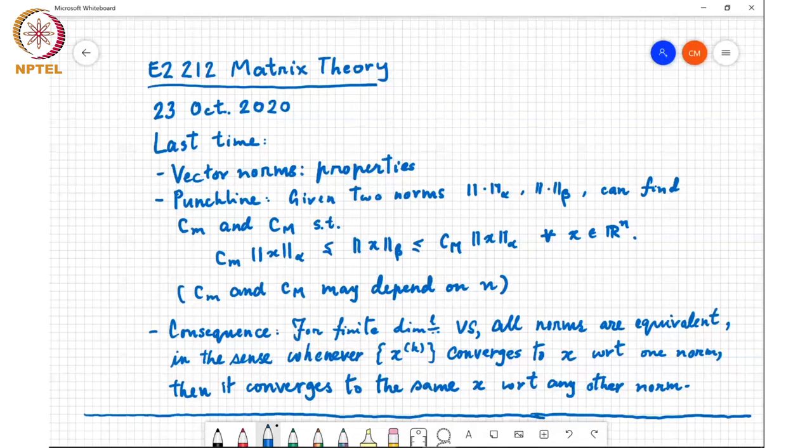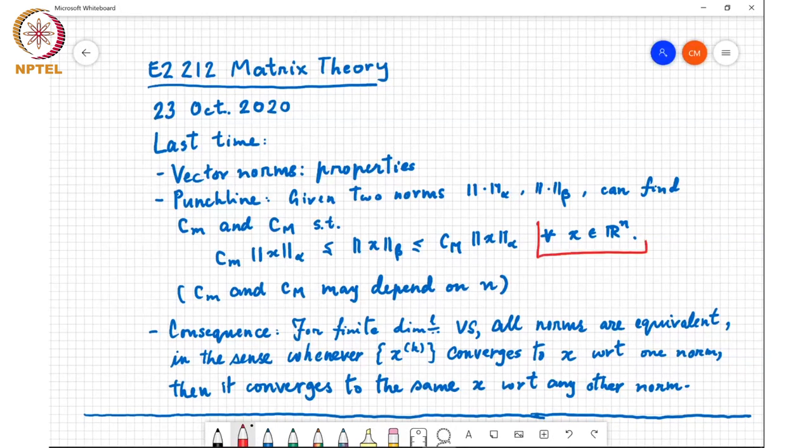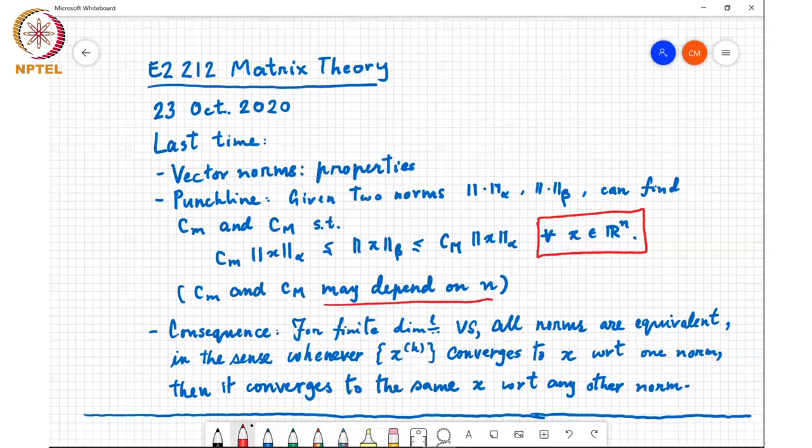For every x in R to the n, so that's the key part - this is a bound that's valid regardless of which x you choose in R to the n. These constants c small m and c capital m may depend on n, the dimension of the space over which you want to find these bounds.